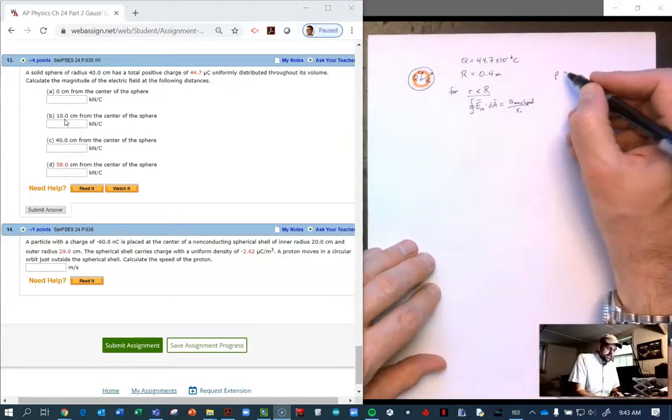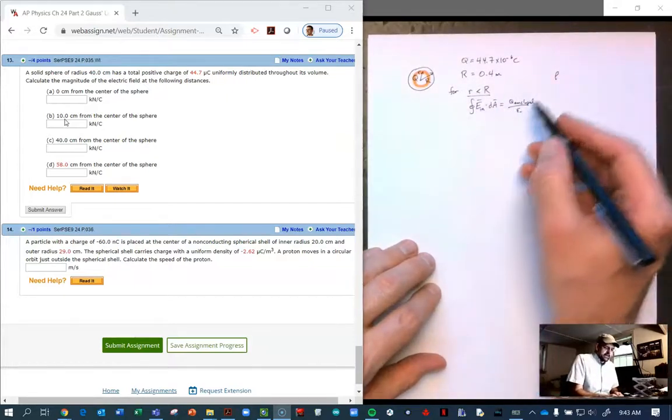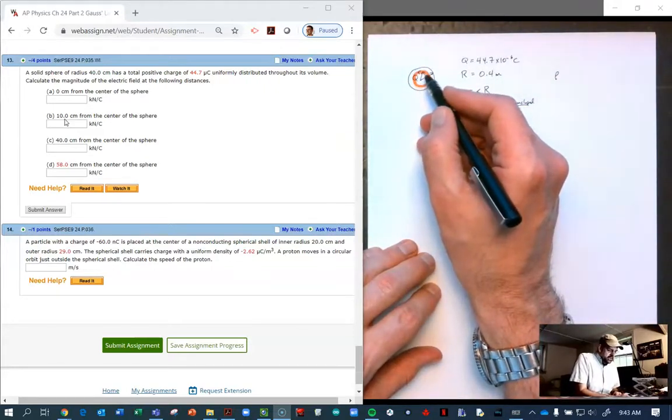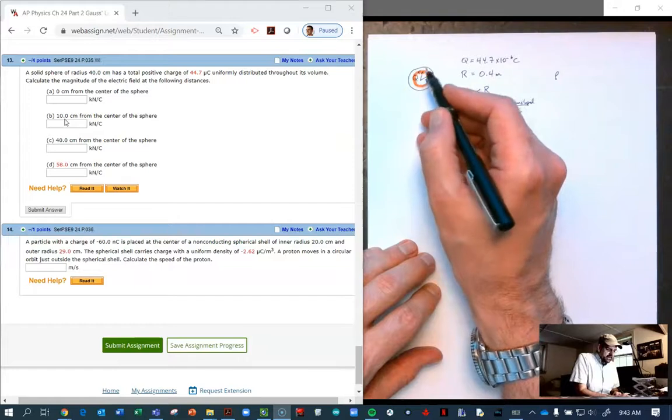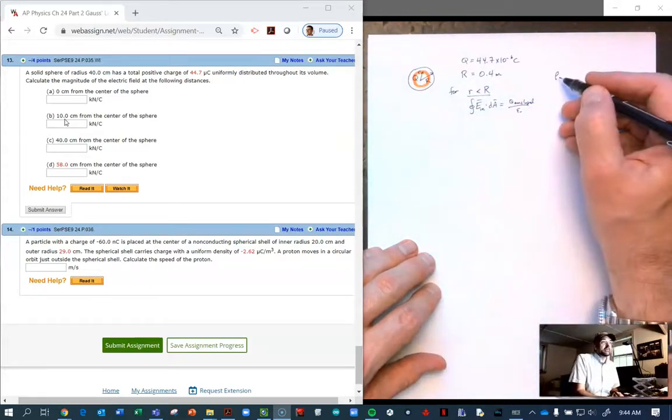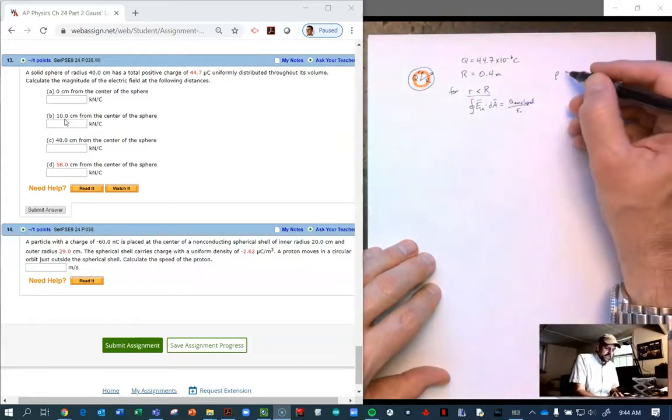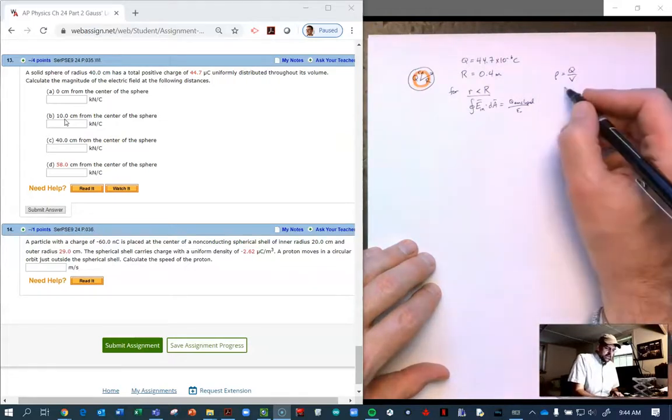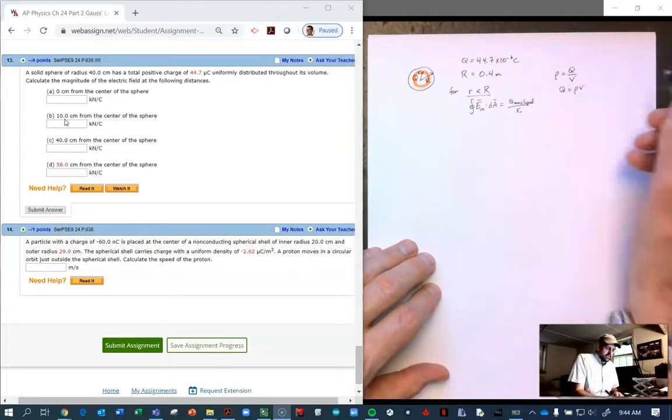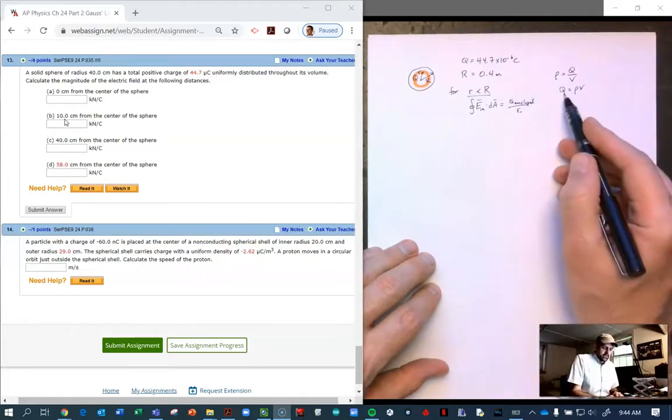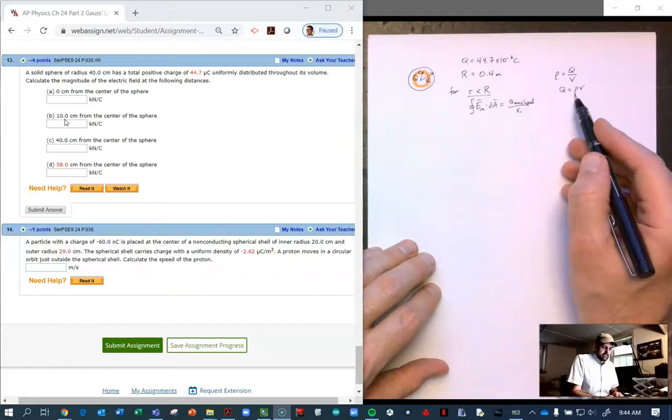And rho is going to be the key here. We're only interested in the charge that's enclosed in the Gaussian, not the total charge. So we need to figure out what that ratio is and we do that through volume. Rho is Q over volume, so Q is rho times volume. And that's true for any constant density. So Q enclosed is simply the density, which is constant, times the volume enclosed.